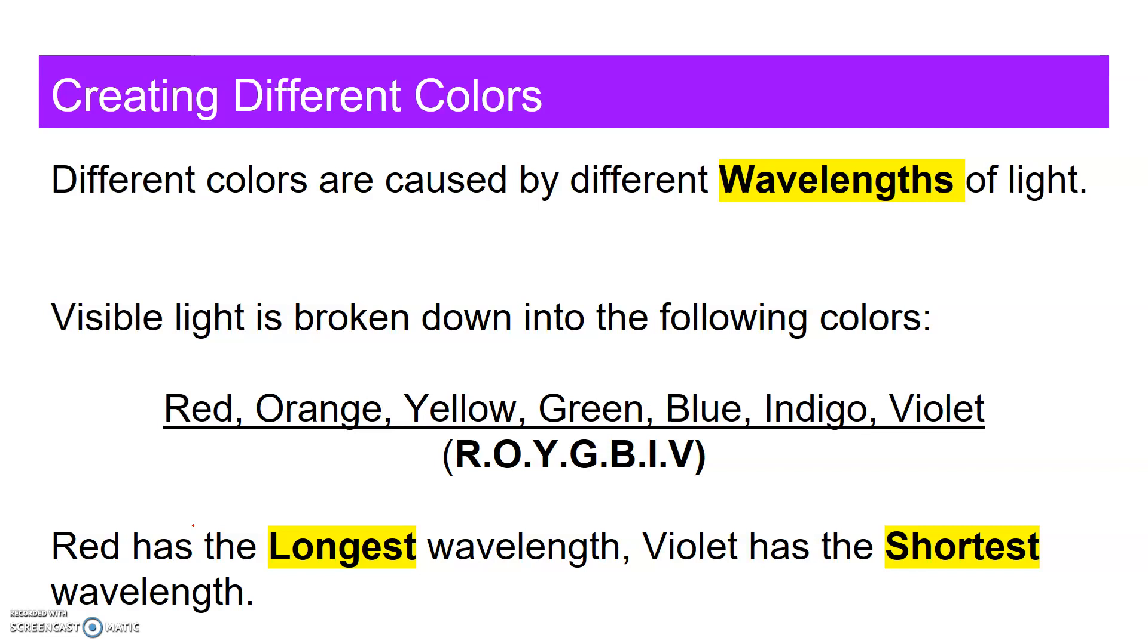Visible light is broken down into the following colors: red, orange, yellow, green, blue, indigo, and violet. I know I said there's an infinite amount of color. That is true, but in physics we define seven basic colors.